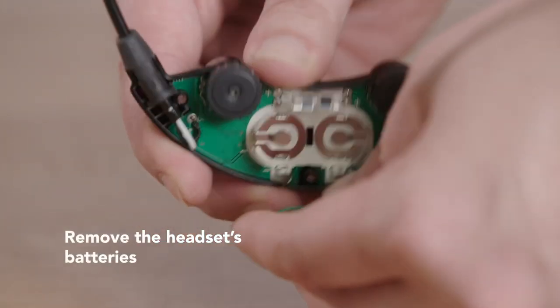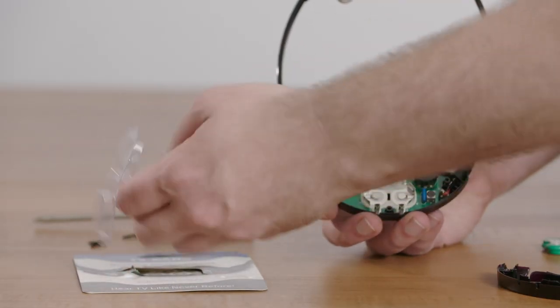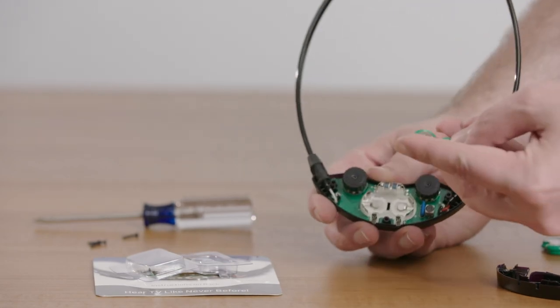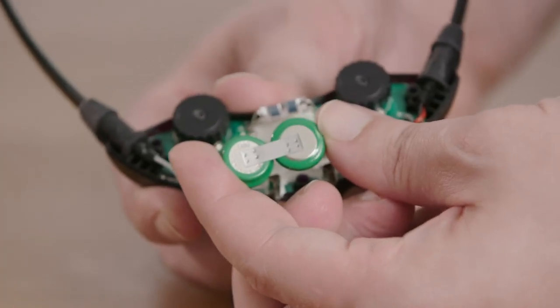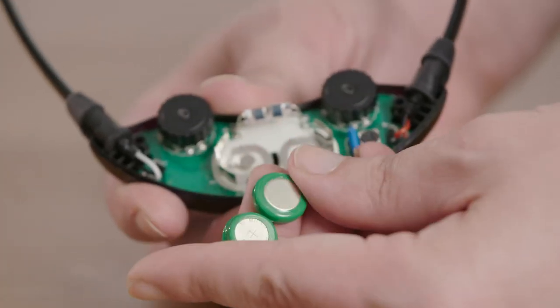First thing we're going to want to do is remove the old one. Then take our new battery. You may notice that one side of the battery has this metal plate running between the two round batteries and the other doesn't.